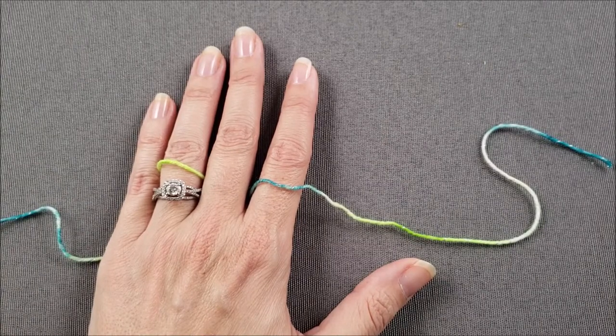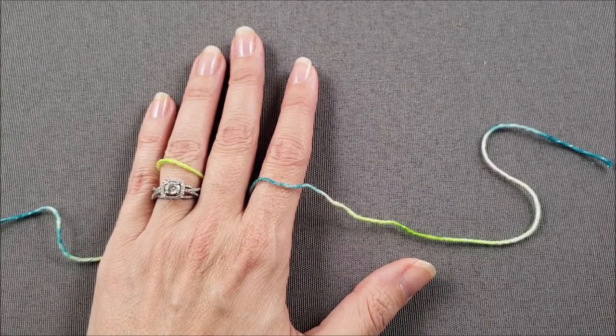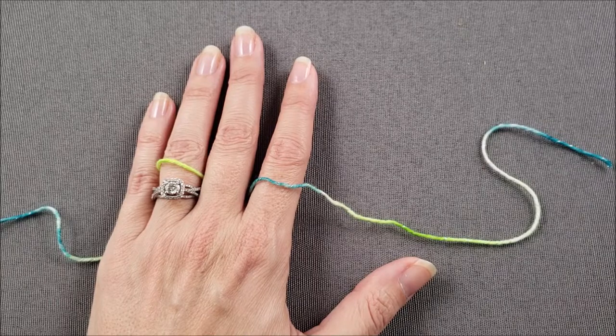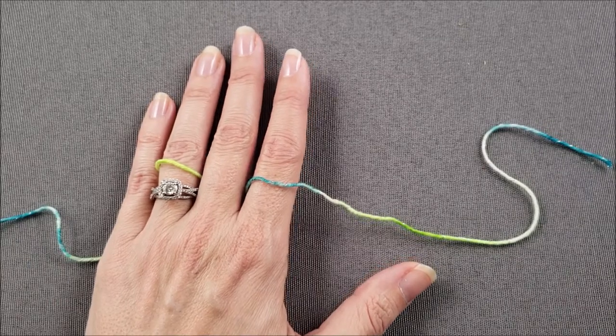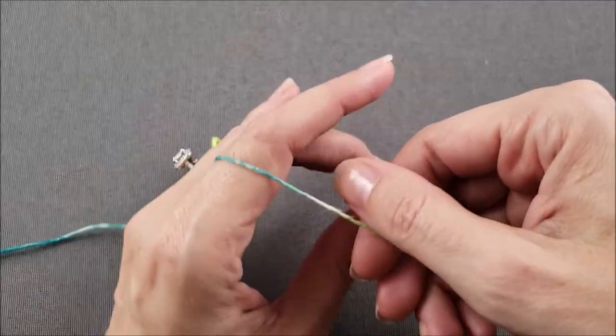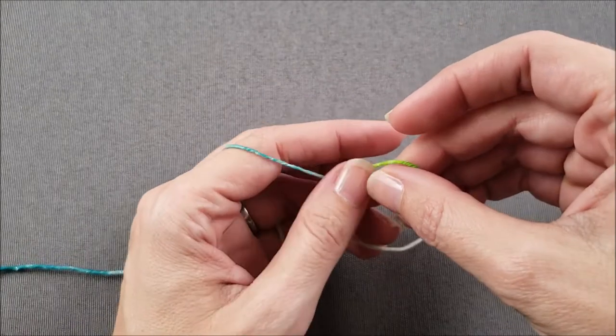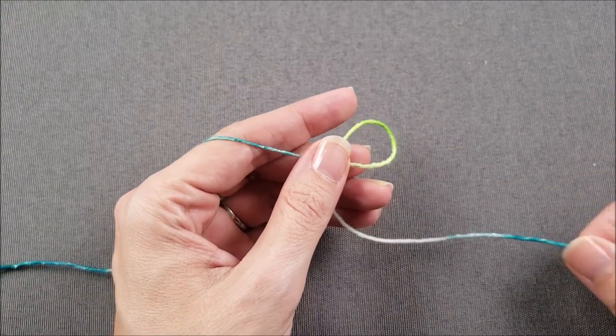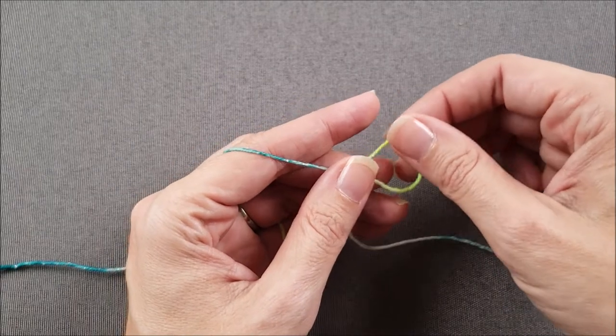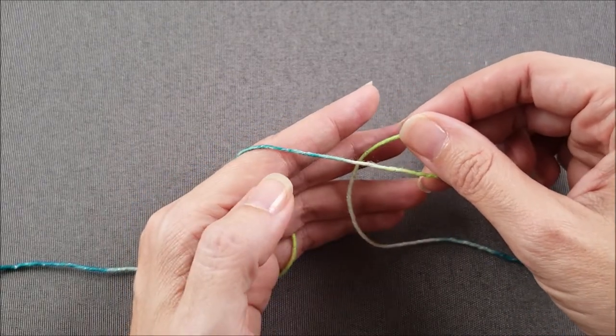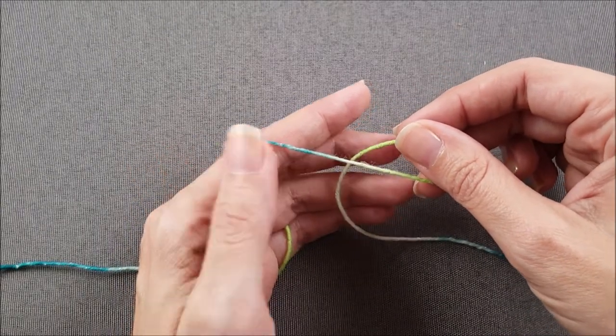I like to weave the yarn over my fingers before I cast on and this helps me provide a little bit of tension as I work. So twist the yarn to make a ring and make sure to leave a tail here that is long enough to weave in later and you'll notice that the yarn tail goes behind the working yarn.